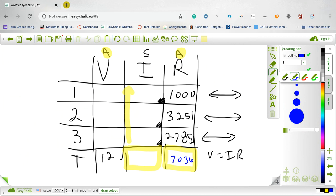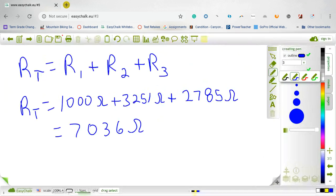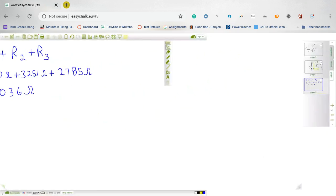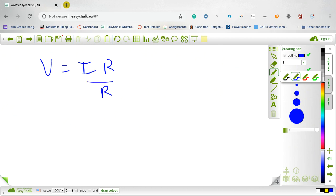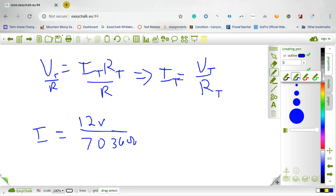Now I'm going to look for that current. I know Ohm's Law: V equals I times R. If I'm looking for I, I divide both sides by R, and that tells me that I is V divided by R. So that means the total current equals the total voltage over the total resistance: 12 volts divided by 7036 ohms. That's 0.0017 amps.